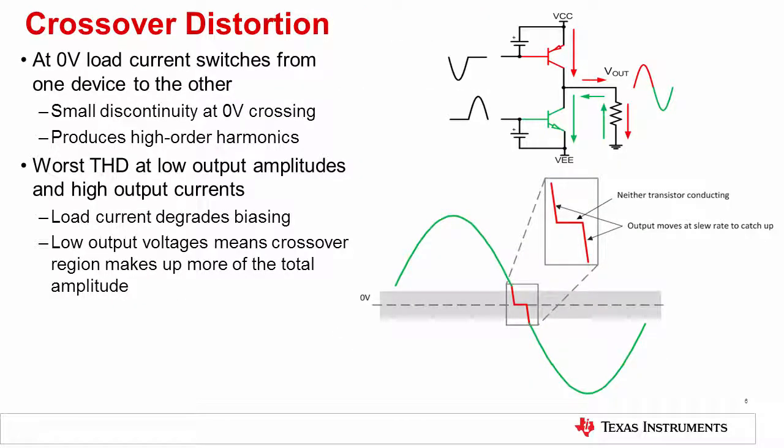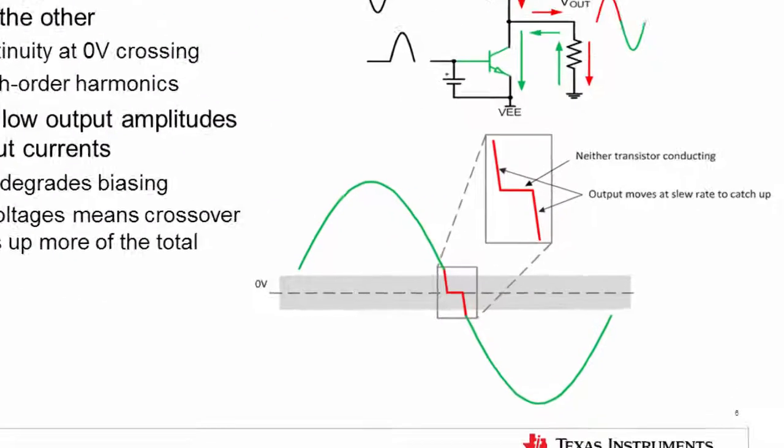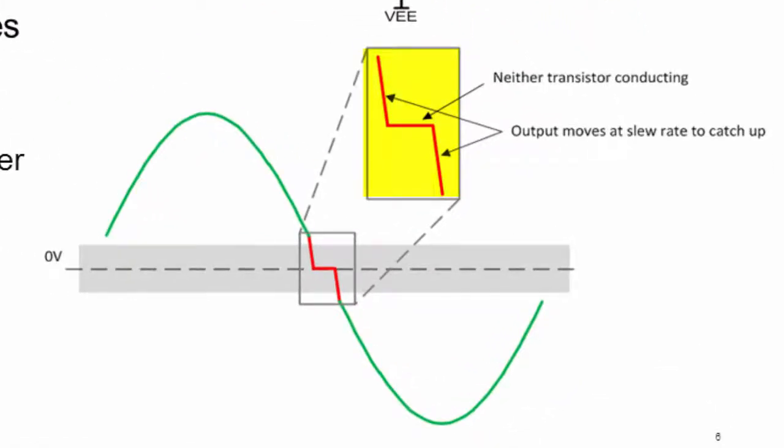Now, let's switch to another region of operation, the crossover region. In this region, temporarily both or neither transistor might be conducting current to the load. We can consider that for outputs near zero volts, the load current will switch from one device to the other. So, we switch from sourcing current into the load to sinking current out of the load. There will always be a small discontinuity in the output near zero volts because the handoff of current is never perfect.